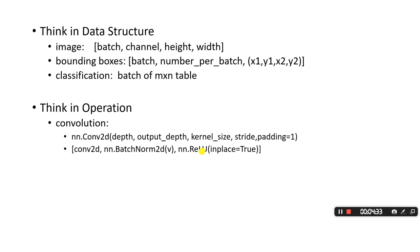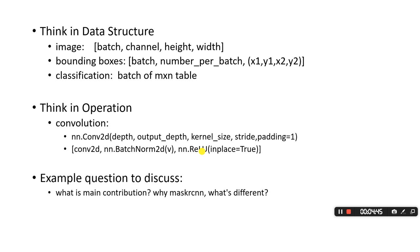The third tip is example questions you can ask whenever you read a paper. The first question is: what is the main contribution of this paper? For example, in Mask RCNN, why do we want to do classification, detection, and segmentation together? Can they help each other? What's different?